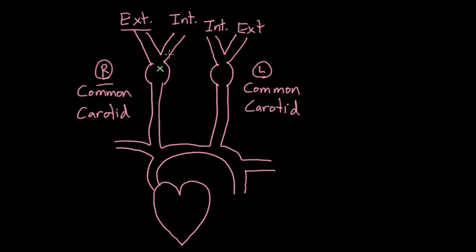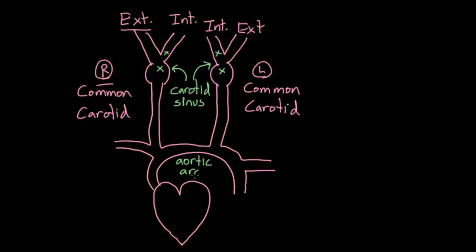Previously we talked about how in these particular locations — the internal side and the bulgy side — we have what are called the carotid sinus. The sinus refers to any sort of open area or open space. There's also an area in the aortic arch. These two areas are the home for our baroreceptors, which are little nerves that detect pressure or stretch in the vessels and give information back to the brain to help regulate blood pressure.